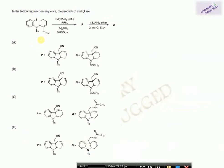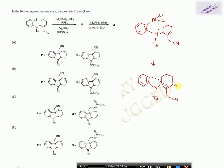Next we take a question from GATE 2019. You have to find products P and Q. The first step is oxidative addition. Silver carbonate is present, so hydropalladation will not occur. After oxidative addition we get an aryl-palladium-iodide complex. In the migratory insertion, palladium coordinates and the aryl attaches; since all options show a five-membered ring, it directly attaches to form the five-membered ring. This is syn addition: if Pd is below the plane, aryl is also below the plane.